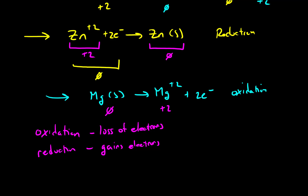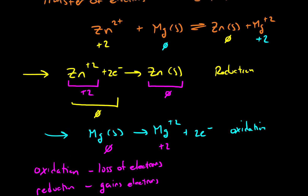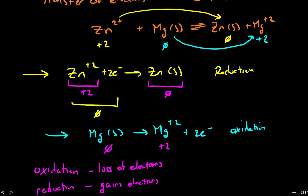Oftentimes it's possible to look at an electrochemical reaction and quickly decide what's being oxidized and what's being reduced. Zinc is going from a plus two to a zero, meaning it is becoming less positive and gaining electrons, so zinc is being reduced. Whereas magnesium is going from a zero charge to a plus two charge, so it is being oxidized — it is losing electrons. However, in subsequent videos we'll see this isn't always so straightforward.